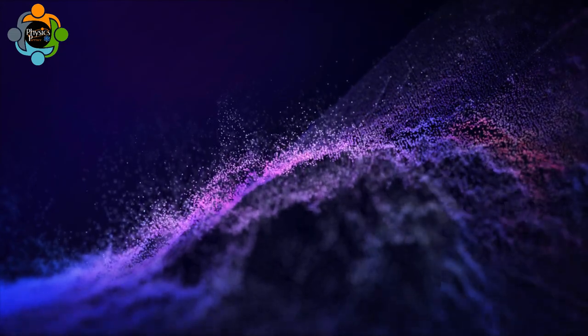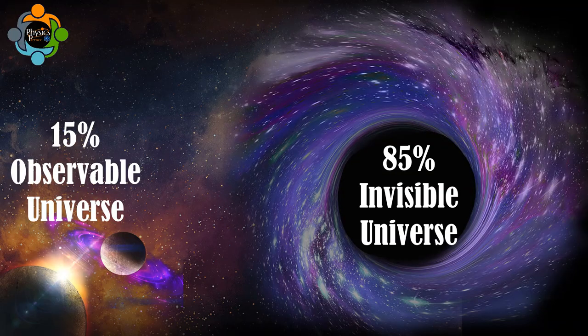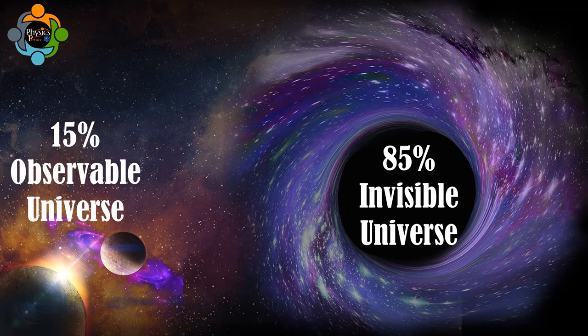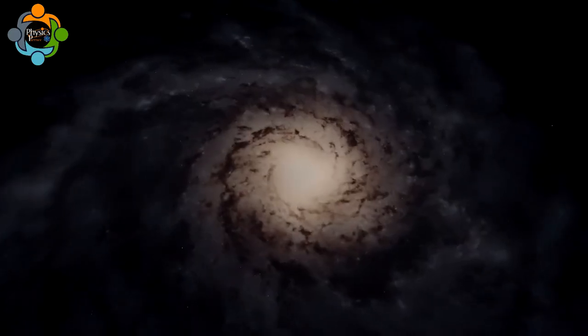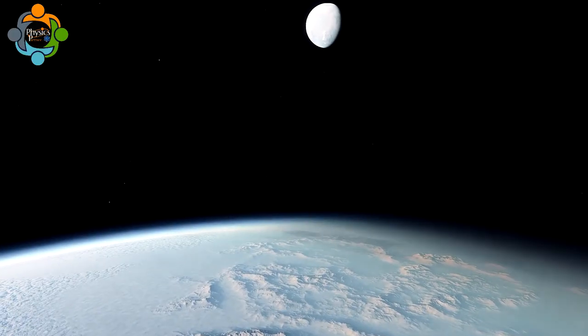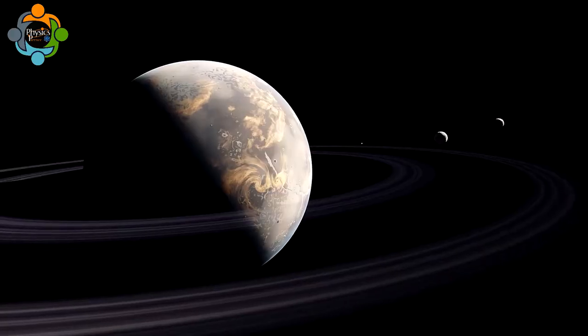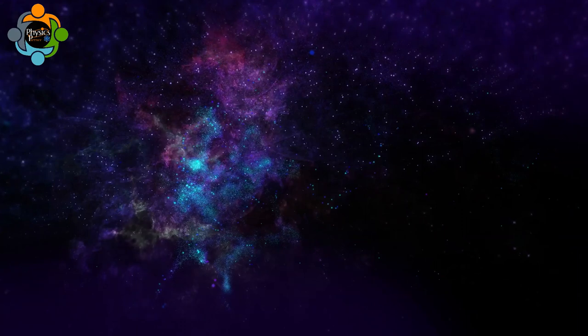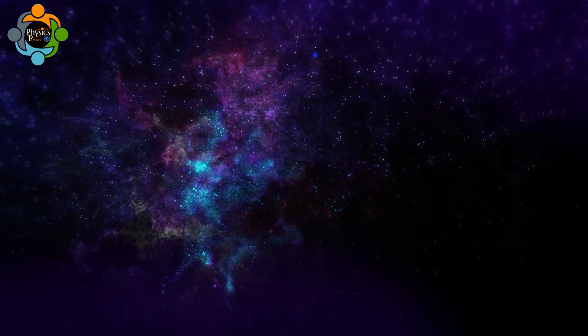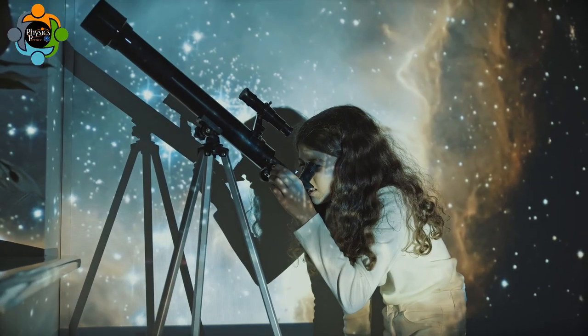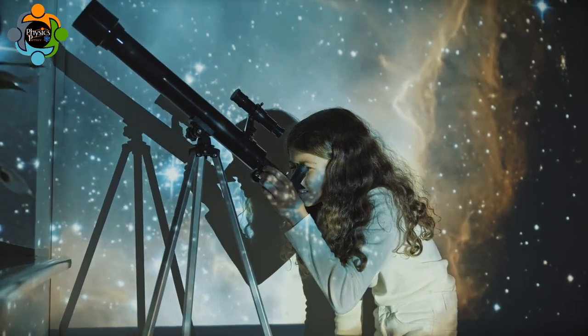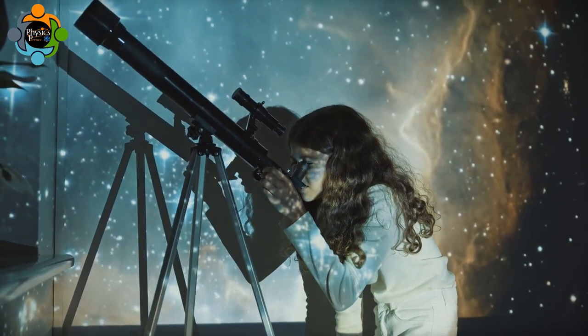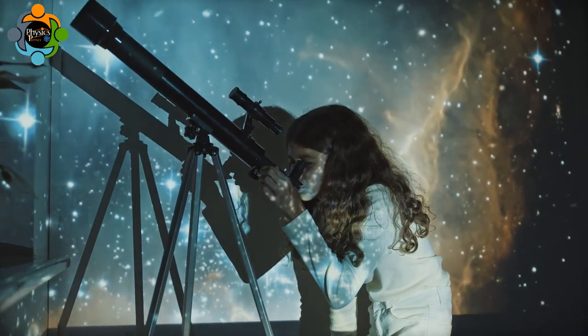To make it more simple, dark matter is an invisible substance that makes up around 85 percent of all the matter in the universe. Matter is anything that has mass and takes up space, like planets, stars, and galaxies. But even though we know there is all this matter out there, we can only detect about 15 percent of it. The rest of the matter is dark matter, and it's invisible to us. We can only tell it's there because of its gravitational pull.